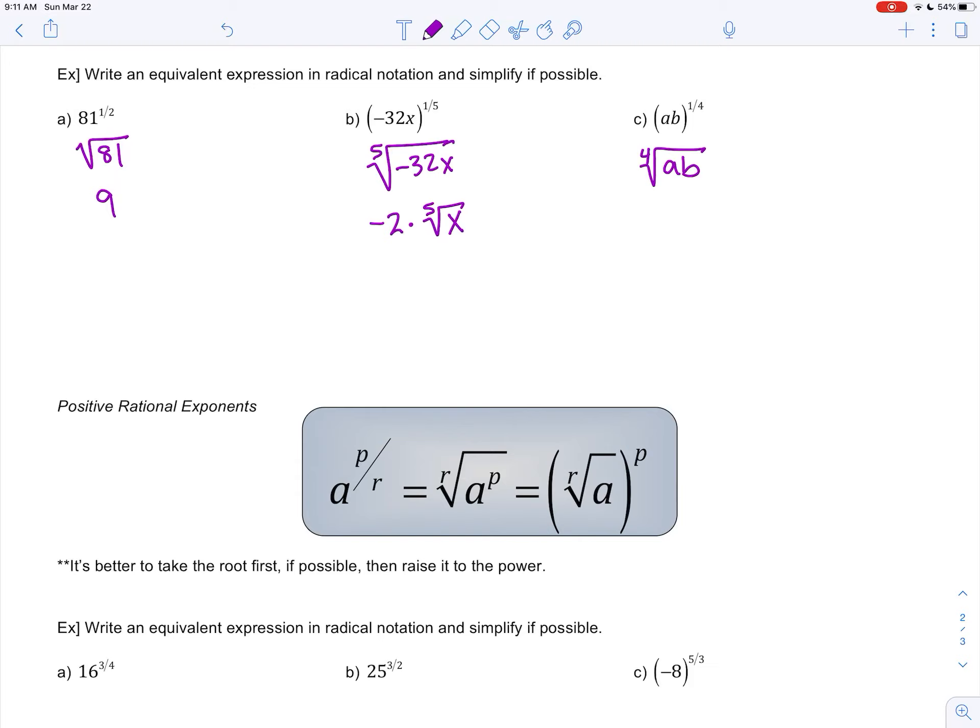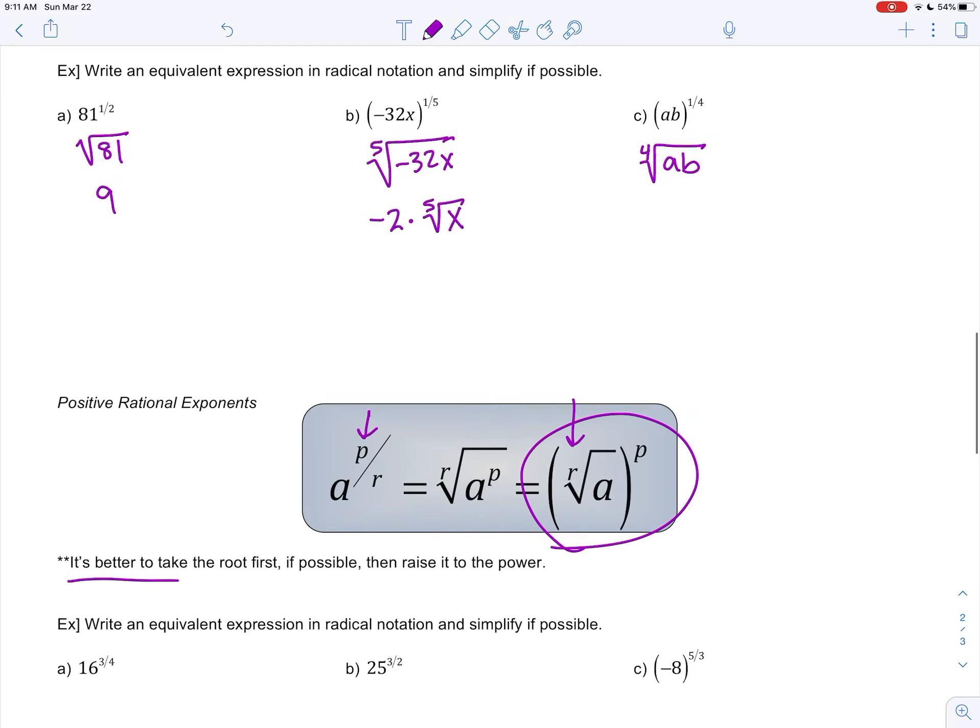In those examples, the numerator was 1. It doesn't necessarily have to be that way. Here you see a power of p. It's really the exponent. I would go with this version, where you take the root first and then raise to the power. When you take the root first, you're making the number smaller. So I think that's an easier way to do it. I put a note about that right here.